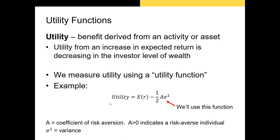The utility function you're looking at right now is one that's used on the CFA exams. It says that a person's utility is equal to the expected return on their portfolio minus one-half times the coefficient of risk aversion, A, times the variance of their portfolio. We should be able to estimate the expected return and the variance. But A, the coefficient of risk aversion, is a bit tricky to estimate.